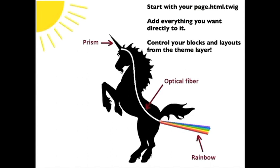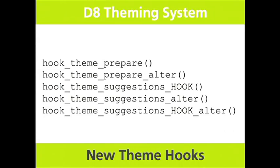Things we thought for sure we were going to get in that didn't: new theme hooks that were going to replace the weird preprocess layer, including hook_theme_prepare, theme_prepare_alter, suggestions hook, and theme_suggestions_alter. As of about two weeks ago, the prepare hooks are not going in. The idea was that right now the preprocess layer is weird and unpredictable — we need a way to pass suggestions in. Whereas before you would just change suggestions in the variables array, the idea was to make it an actual hook.